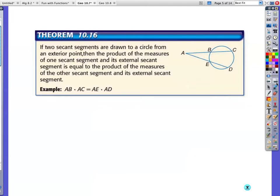If two secant segments are drawn to a circle from an exterior point, then the product of the measures of one secant segment and its external secant segment is equal to the product of the measures of the other secant segment and its external secant segment. What? Don't write that down, please. Draw the picture would be good, and then do something like it that simplifies this a little bit for all of us.